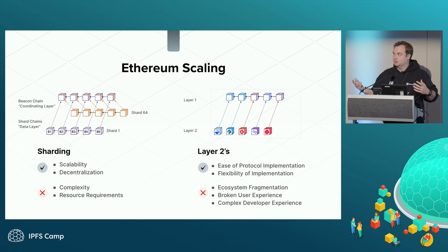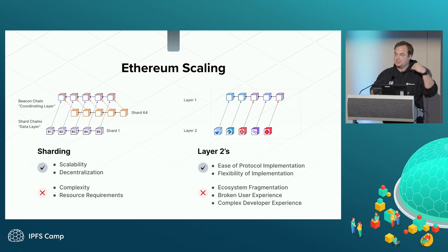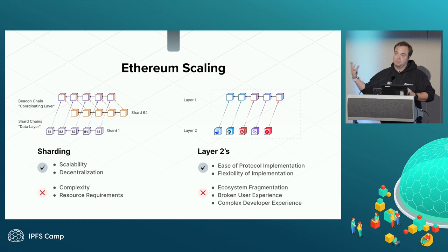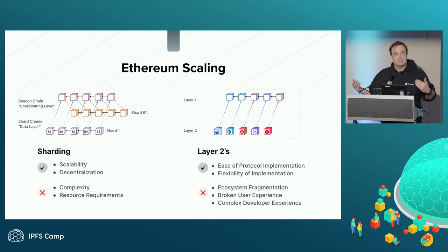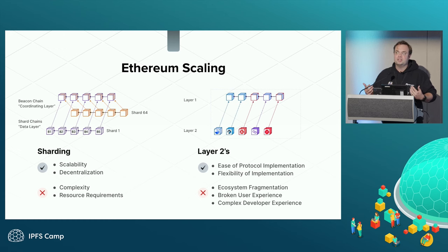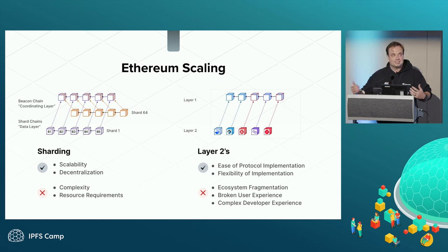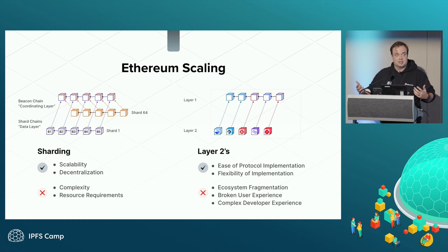Let's talk about Ethereum scaling solutions: the sharding path and layer twos. With sharding, there's a beacon chain layer with many shards — from shard one to shard 64 — breaking up data and submitting blobs to the beacon chain. The benefit is you can scale natively within the Ethereum protocol while maintaining decentralization. The difficulty, and why they moved away from it, is it's very complex for the protocol to implement, especially running on thousands of nodes, while also tackling the move from proof of work to proof of stake.